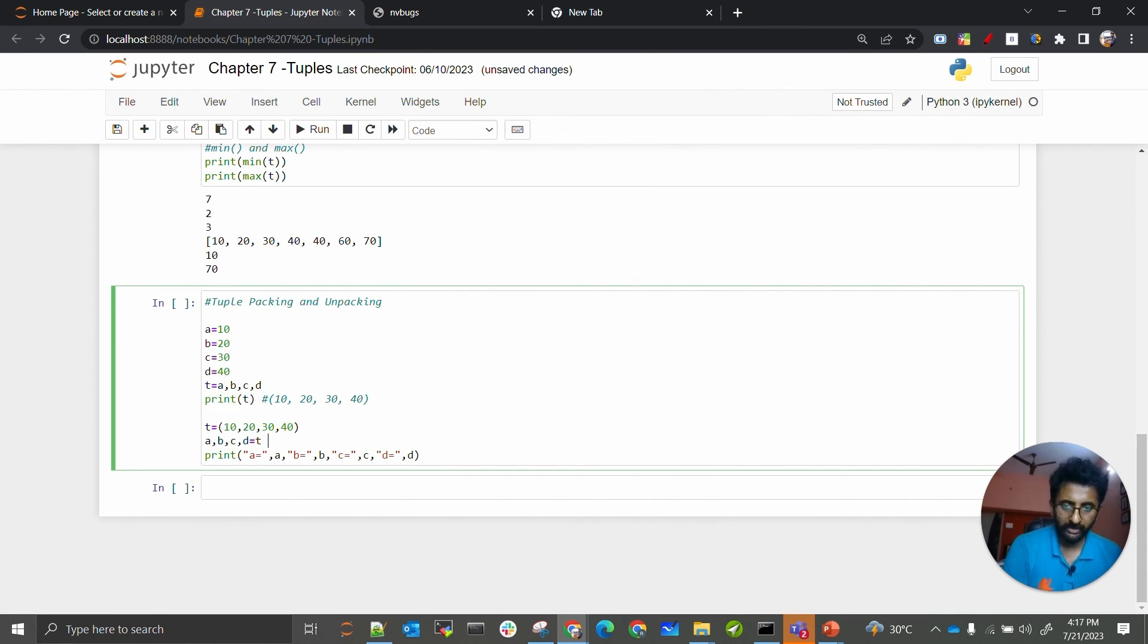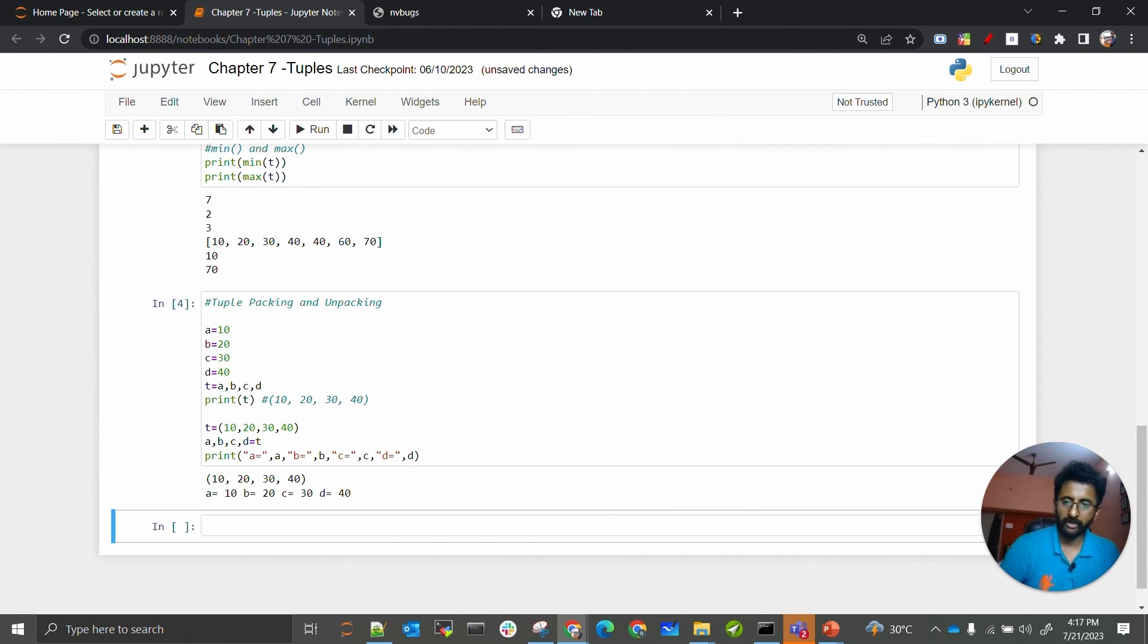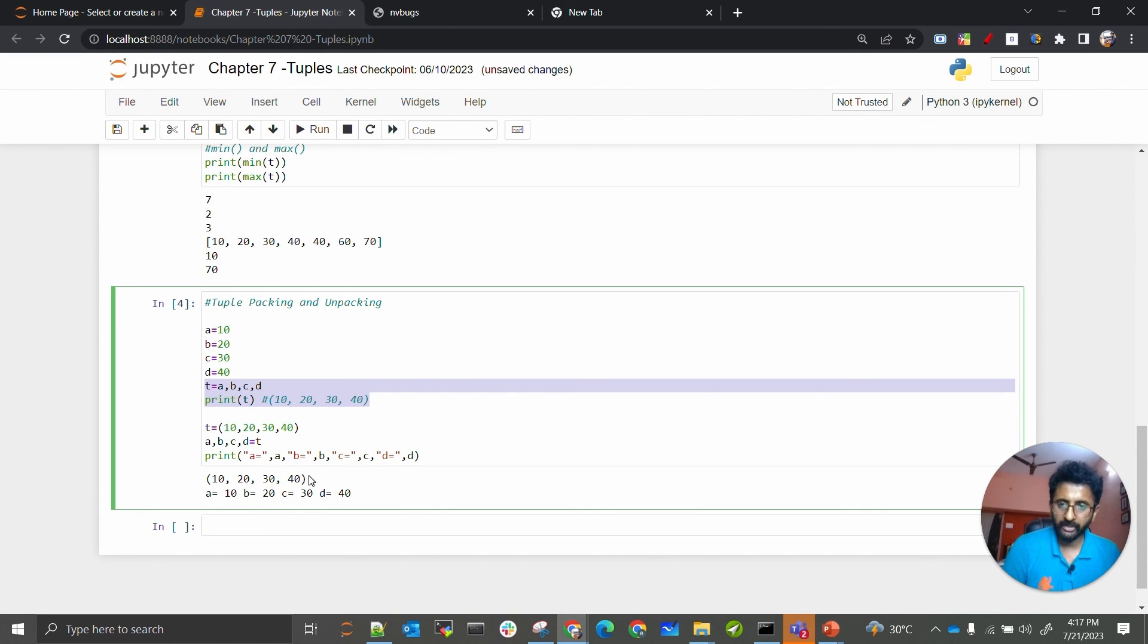And similarly, you can unpack as well. For example, t is having multiple values. You can just take a number of variables which are equal to the values and assign it to t. So all of those values one by one will get assigned to a, b, c, and d. When we are printing, first we have printed combined values together by packing, and second one was the example of unpacking. This is how tuple packing and unpacking works.